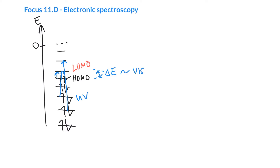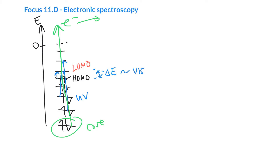We can also take one of the deep core electrons and actually pull it out of any bound molecular orbital — at that point it's essentially a free electron. It turns out that X-rays are going to do the job here.